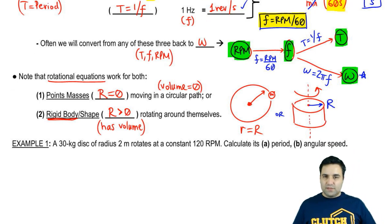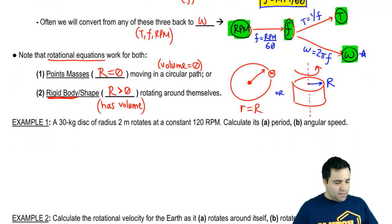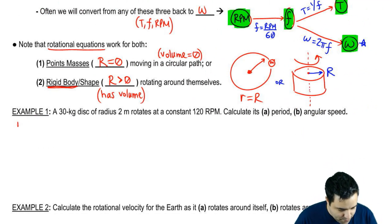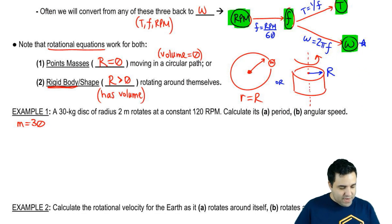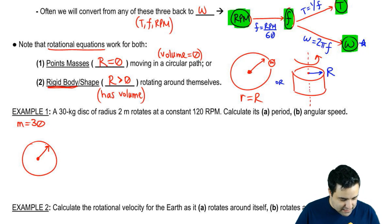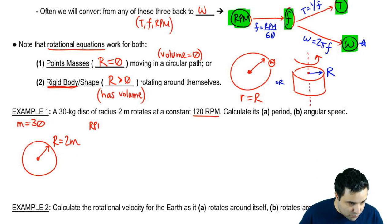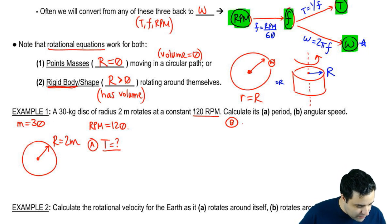So that's a quick intro. Gave you some equations, how to connect things together between these four different variables. Now we're going to do a problem. So I have a 30 kilogram disk, mass equals 30, radius 2. Let's draw a disk, it's just a circle. The radius is 2. This is a disk, it's a rigid body or a shape. The radius of this thing is 2. And it rotates at a constant 120 RPM, so RPM equals 120. We want to know its period and angular speed.